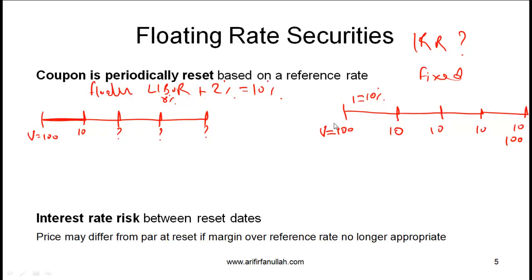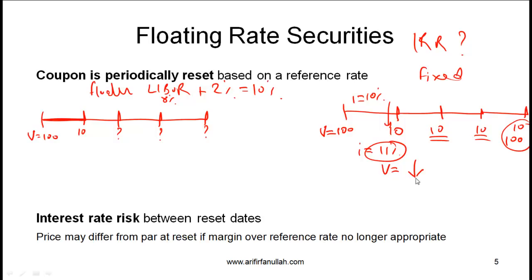What happens to both bonds when interest rates go up? For the fixed-rate bond, as interest rates rise to say 11%, the value comes down because those fixed future cash flows are now discounted at a higher rate. If interest rates keep going up, the value of the fixed-rate bond keeps coming down — going back to the price-yield curve, as yield increases the price keeps falling.